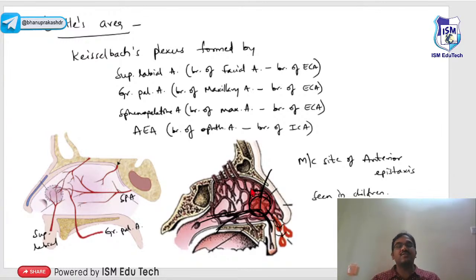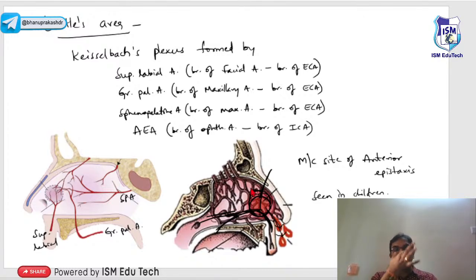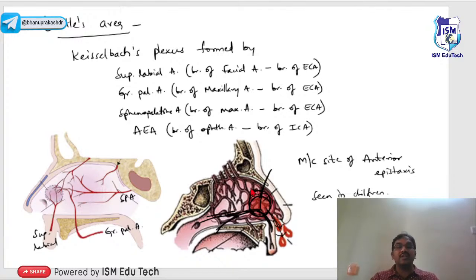These four arteries converge in Little's area, forming Kiesselbach's plexus — an extensively rich vascular supply. Most children are brought with nose bleeding due to nasal infections or nose picking, where the nail traumatizes Kiesselbach's plexus. Simply pressing the nose for a few minutes stops the bleeding. The most common site of anterior epistaxis is Little's area.